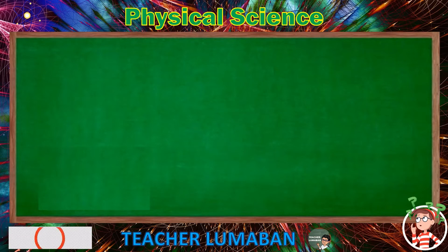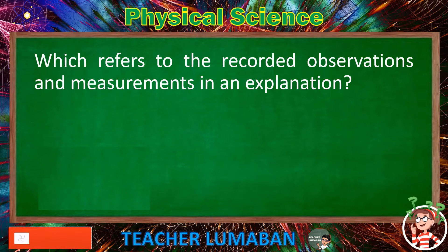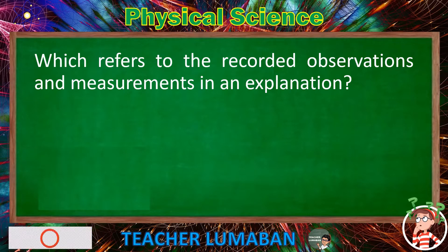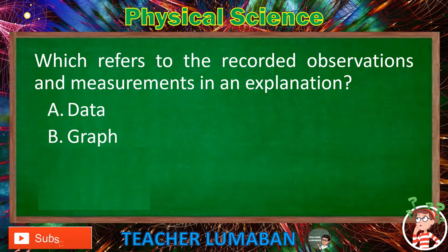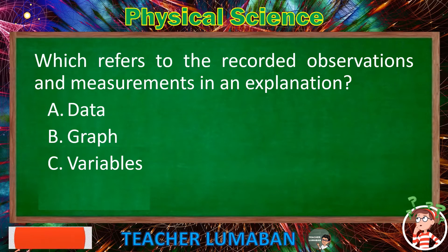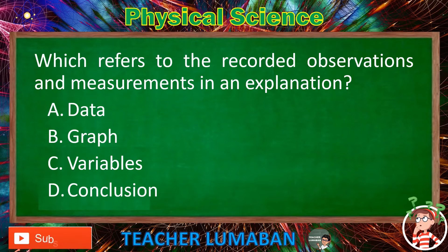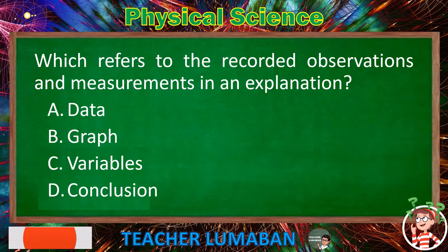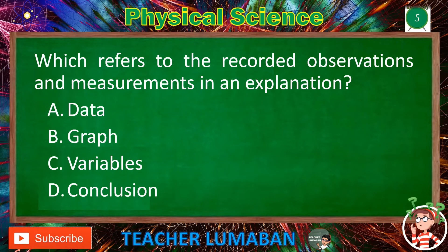Which refers to the recorded observations and measurements in an explanation? Letter A: Data. Letter B: Graph. Letter C: Variables. Letter D: Conclusion. Choose the suitable answer based on the given choices in 5 seconds.